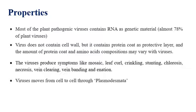Viruses produce different types of symptoms such as mosaic, leaf curl, crinkling, stunting, chlorosis, and vein clearing. However, yellowing is the most commonly observed symptom. After virus infection, chlorophyll content is reduced, causing green leaves to turn yellow.